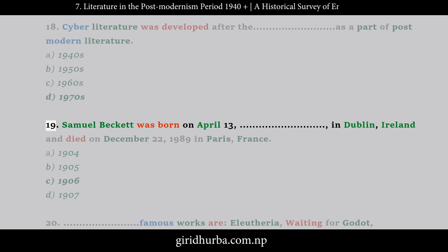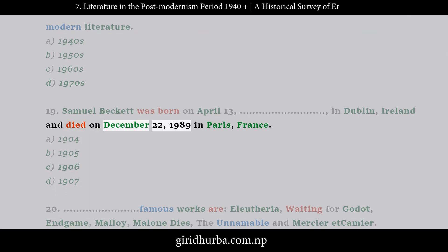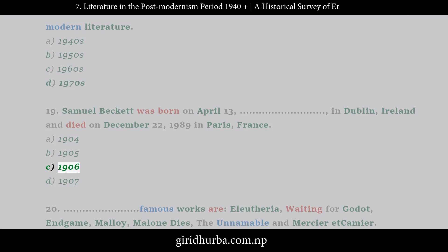Question 19: Samuel Beckett was born on April 13 in Dublin, Ireland, and died on December 22, 1989, in Paris, France. Which year was he born? A. 1904. B. 1905. C. 1906. D. 1907.